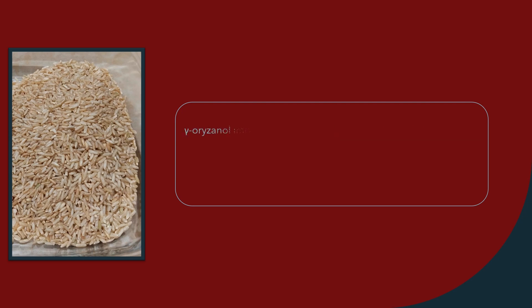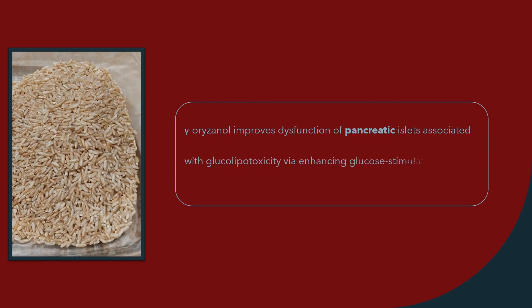Gamma oryzanol improves dysfunction of pancreatic islets associated with glucolipotoxicity, via enhancing glucose-stimulated insulin secretion and inhibiting the excessive secretion of glucagon.